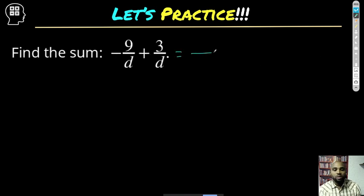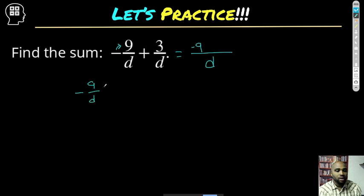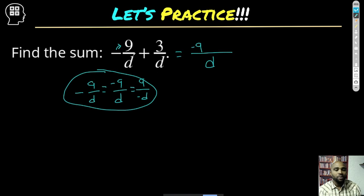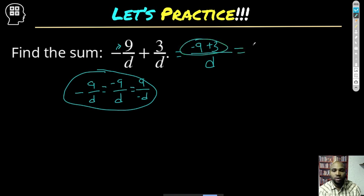What about this one? We do have a like denominator, which is d. This negative sign gets attached to the 9. Remember: negative 9 over d equals negative 9 over d — and also equals 9 over negative d — all three forms are equal. We want to keep the denominator d the same, so we bring the negative up to the 9. After doing that, we add our 3. Can we simplify further? Yes — that gives us negative 6 over d, and there's nothing else we can do.